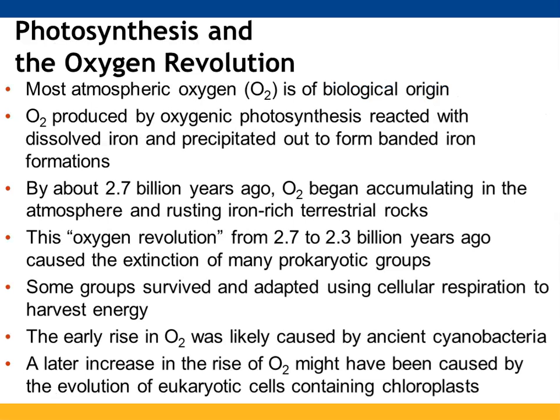Photosynthesis and the oxygen revolution: oxygen is produced by photosynthesis and it reacts with dissolved iron and precipitates out to form iron oxide formations. About 2.7 billion years ago, oxygen began accumulating in the atmosphere, and we started seeing more iron-rich terrestrial rocks rust. When oxygen first started to accumulate between 2.7 and 2.3 billion years ago, several prokaryotic groups became extinct. The ones that survived used cellular respiration to harvest energy. It's thought that the rise in oxygen was initially caused by ancient cyanobacteria, and that later increases might have been caused through the evolution of eukaryotic cells that contain chloroplasts.